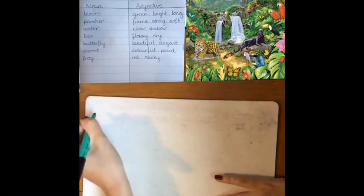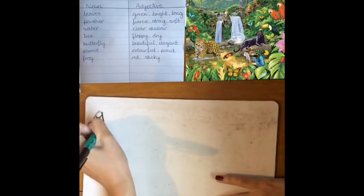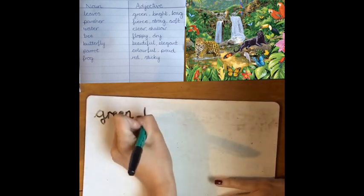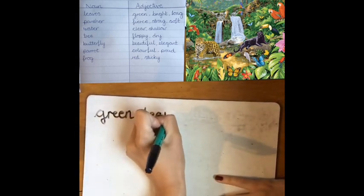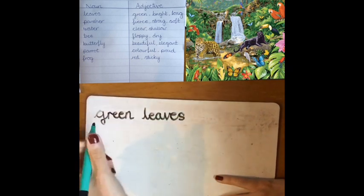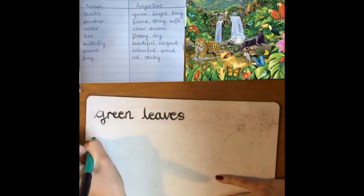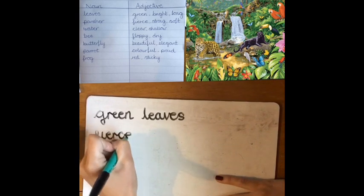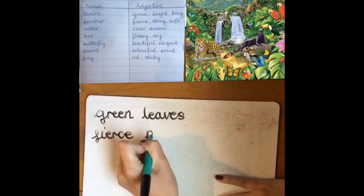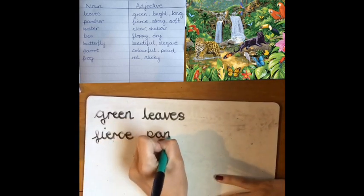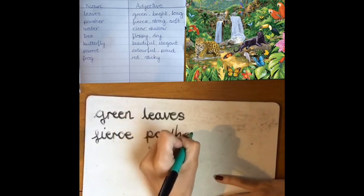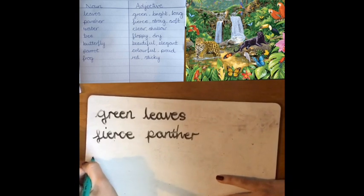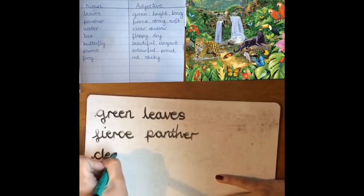You are then going to start making your noun phrase. The first thing you need to do is pick an adjective and then pick your noun. So I'm going to start with green leaves — I've chosen leaves as my noun and picked one of those adjectives. I'm going to do another one: fierce panther. I've used my adjective fierce and my noun panther, and put them together to make a noun phrase.